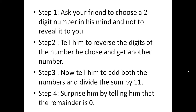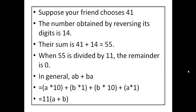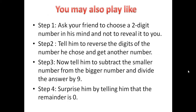In general form, represent the number as ab. After reversing it is ba. Their general forms are a×10 + b×1 and b×10 + a×1. Adding both gives 11×(a+b). So whatever number you take, the sum is a multiple of 11, and dividing by 11 always leaves remainder 0.